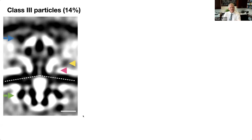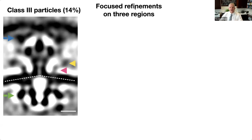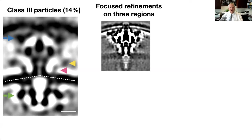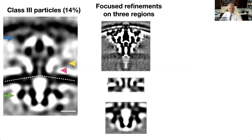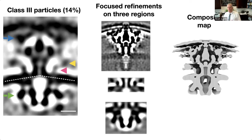The next step was to take class 3 particles and do focused refinement on three different regions. Because this complex is quite flexible, you can't align it as a rigid body. Focused refinement just on the periplasmic region gives higher detail - you can see the two leaflets of the outer membrane. Then focused refinement around the inner membrane made the linker densities quite a bit clearer. Finally, focused refinement on the cytoplasm clearly revealed the ATPase densities.